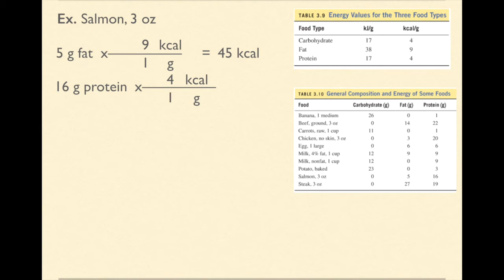And so that, when I multiply them, gives me 64 kilocalories. So to determine the number of kilocalories that are in three ounces of salmon, all you now have to do is add those two values together and you get 109 kilocalories.